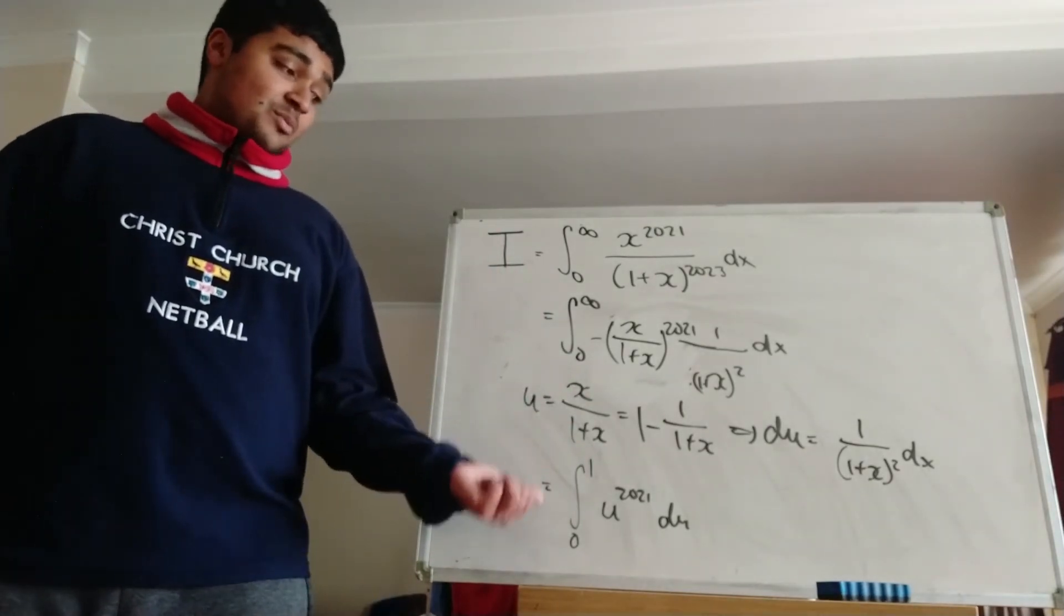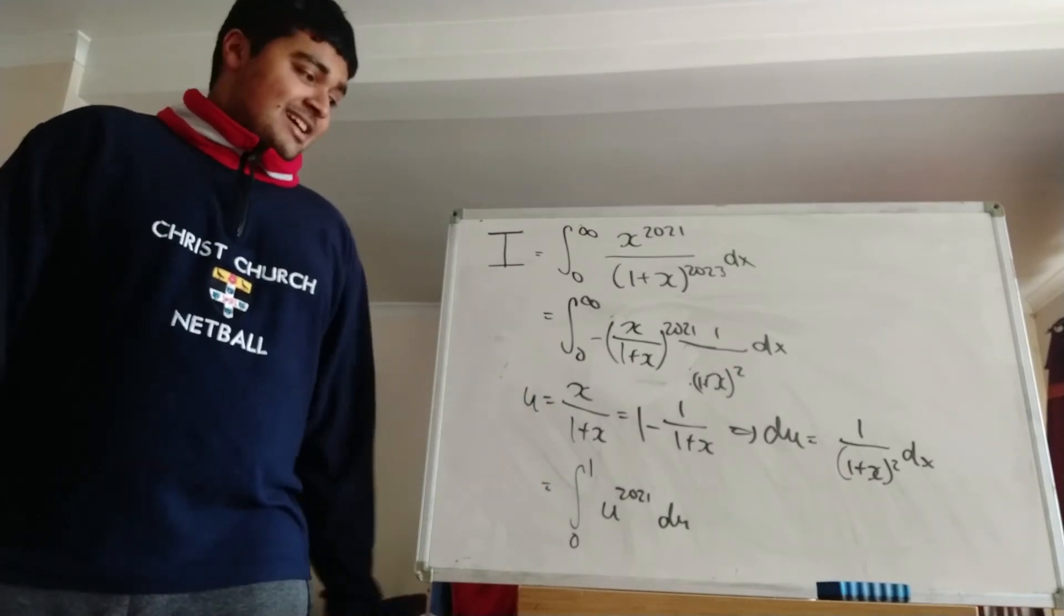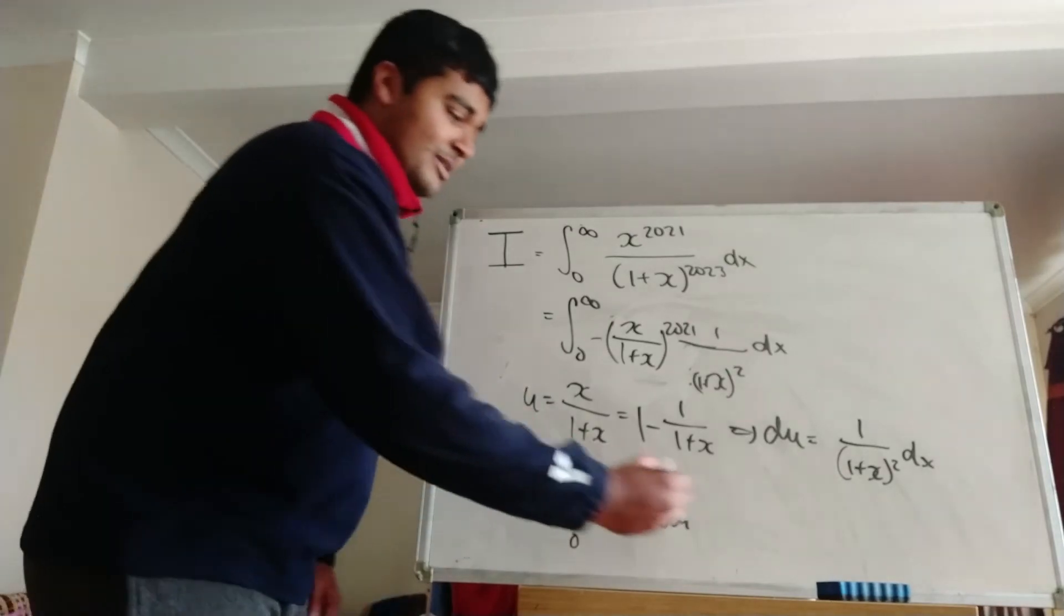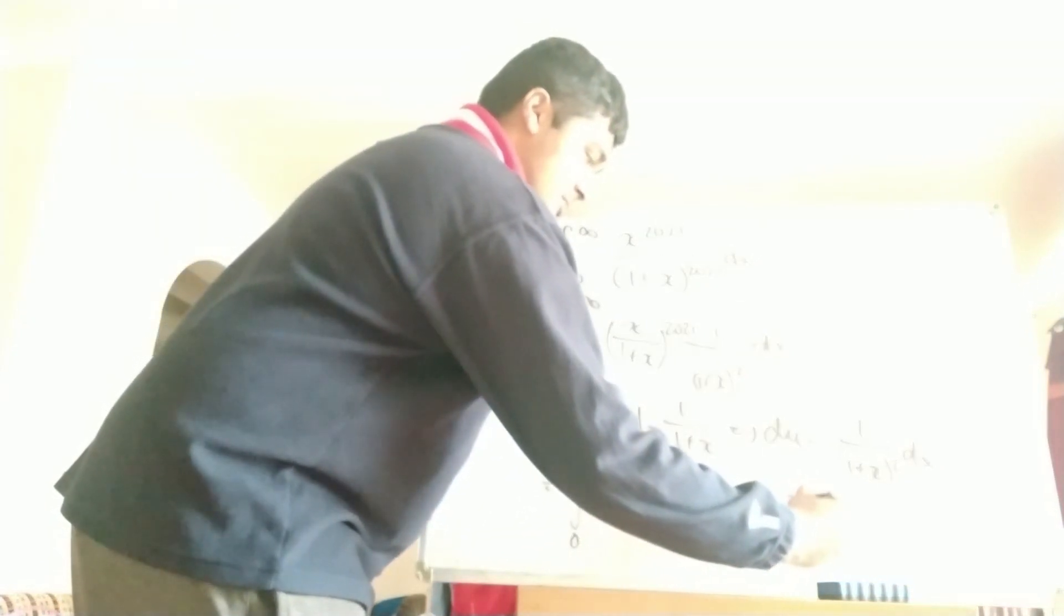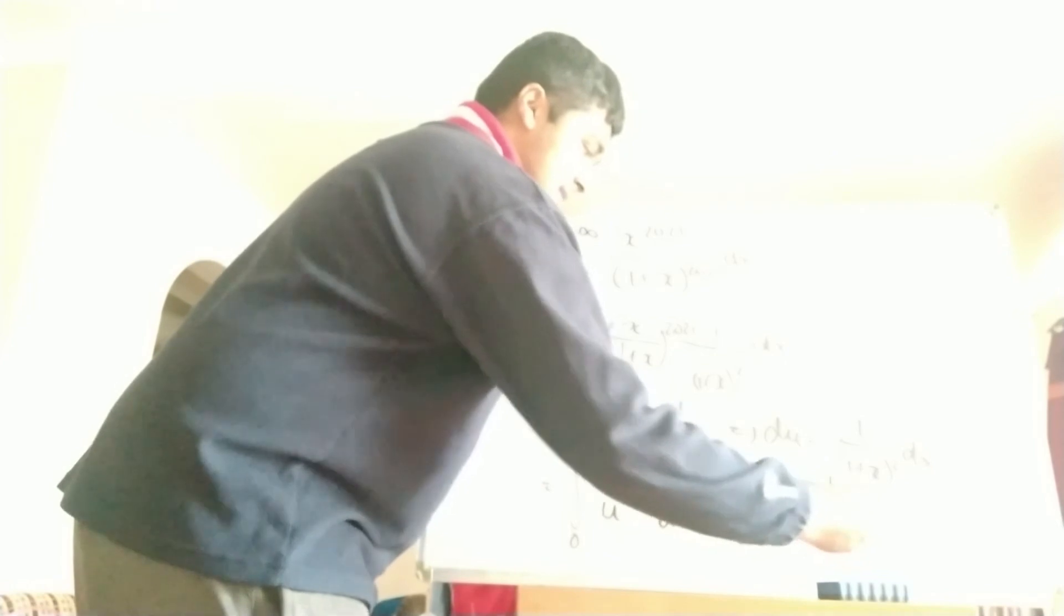So now we just have to compute the integral from 0 to 1 of u to the 2021 du, and this is a very straightforward integral. This is just 1 over 2022 times u to the 2022, evaluated from 1 to 0.